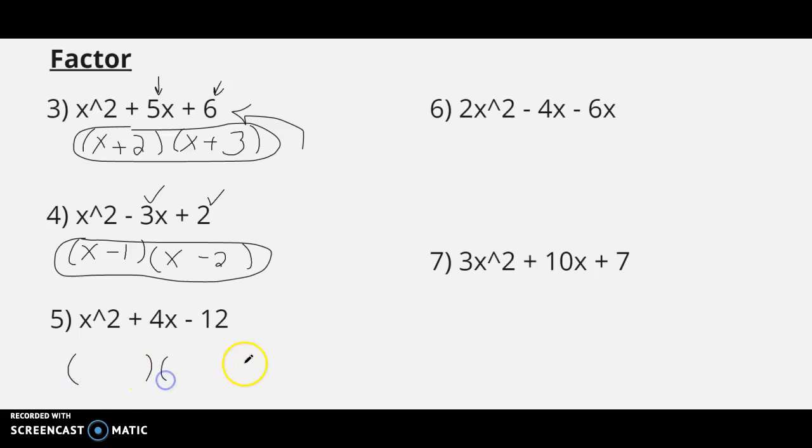Setting up number 5, x and x again. This time, what factors of negative 12 add up to positive 4? Those two numbers would be a plus 6 and a minus 2. This is the factored form.